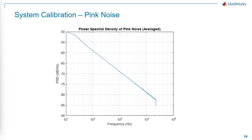Now, what about a random signal? Let's talk about pink noise. If it is white noise, you will see the spectrum as a horizontal line in the frequency domain. With pink noise, the spectrum slopes gently downward — that is why we call it pink. Pink noise is generally more pleasant to the ear, making it the preferred choice for calibrating our system.